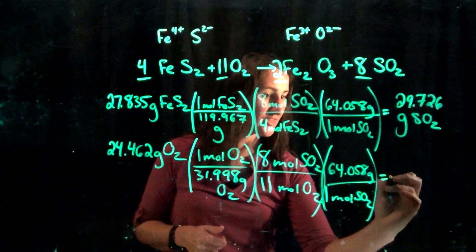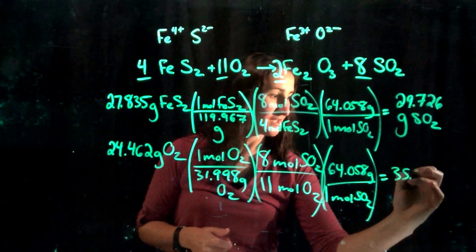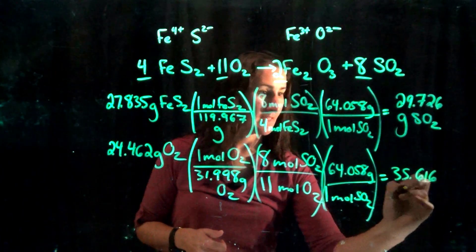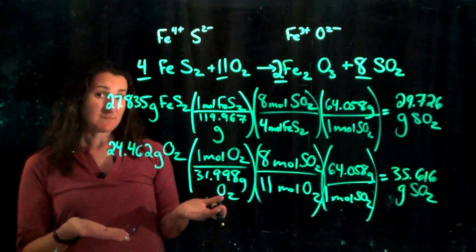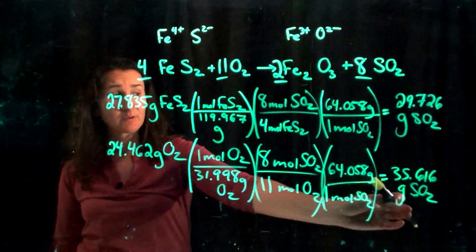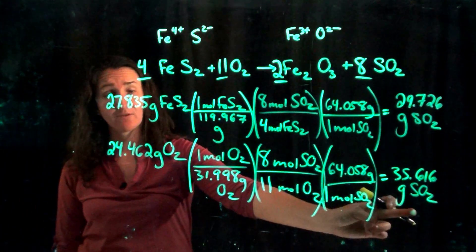So that equals 35.616 grams of sulfur dioxide. What do these two numbers mean? Am I ever going to actually produce 35.6 grams of sulfur dioxide?